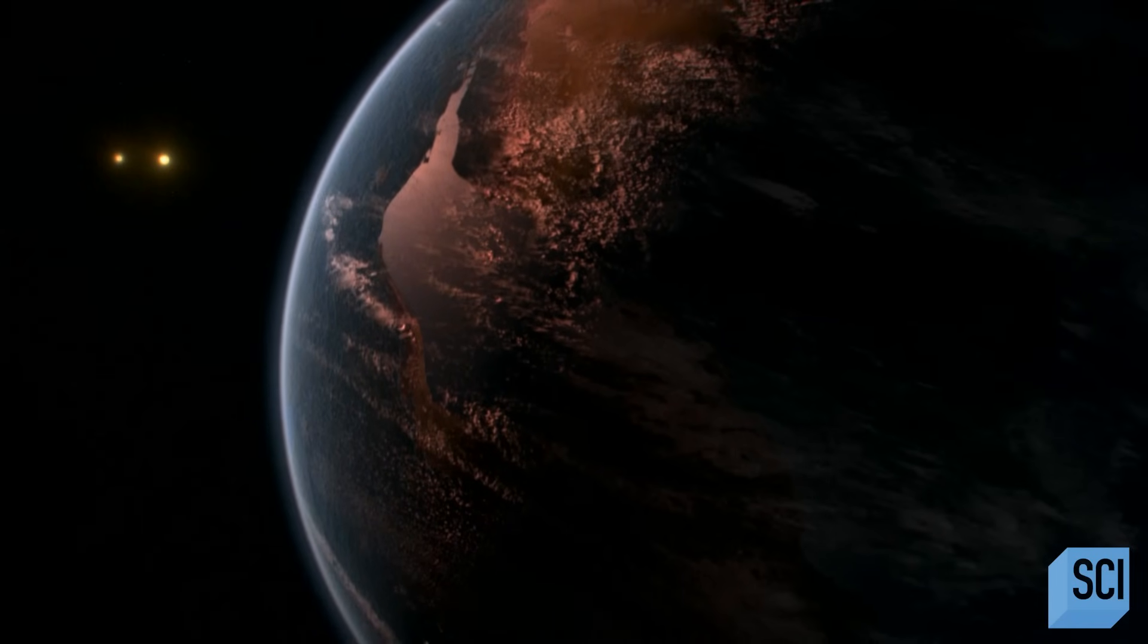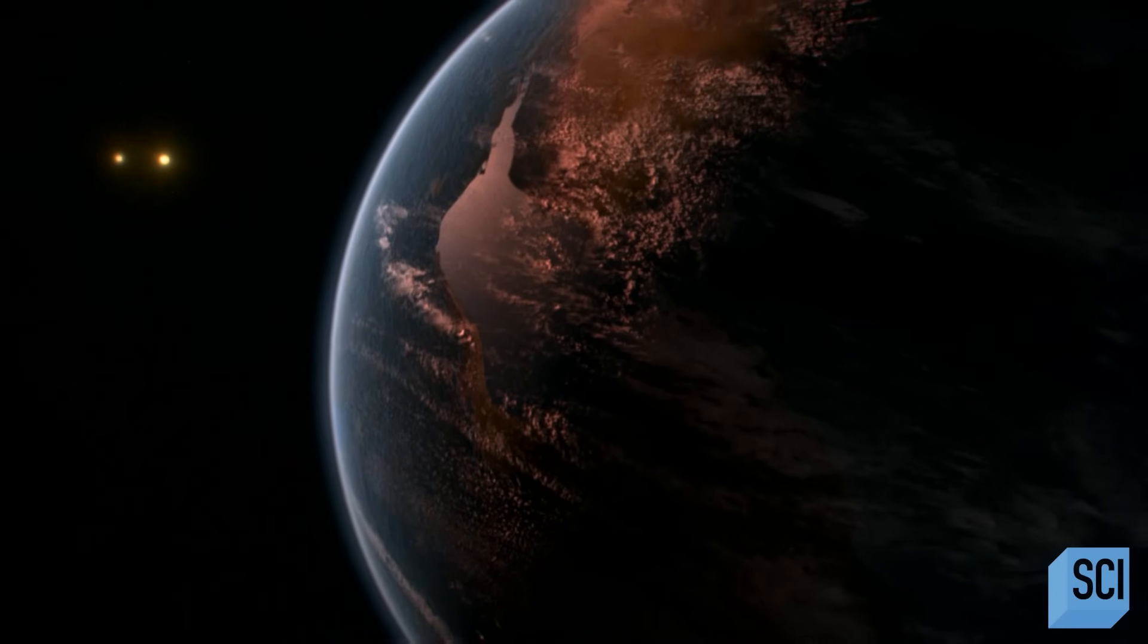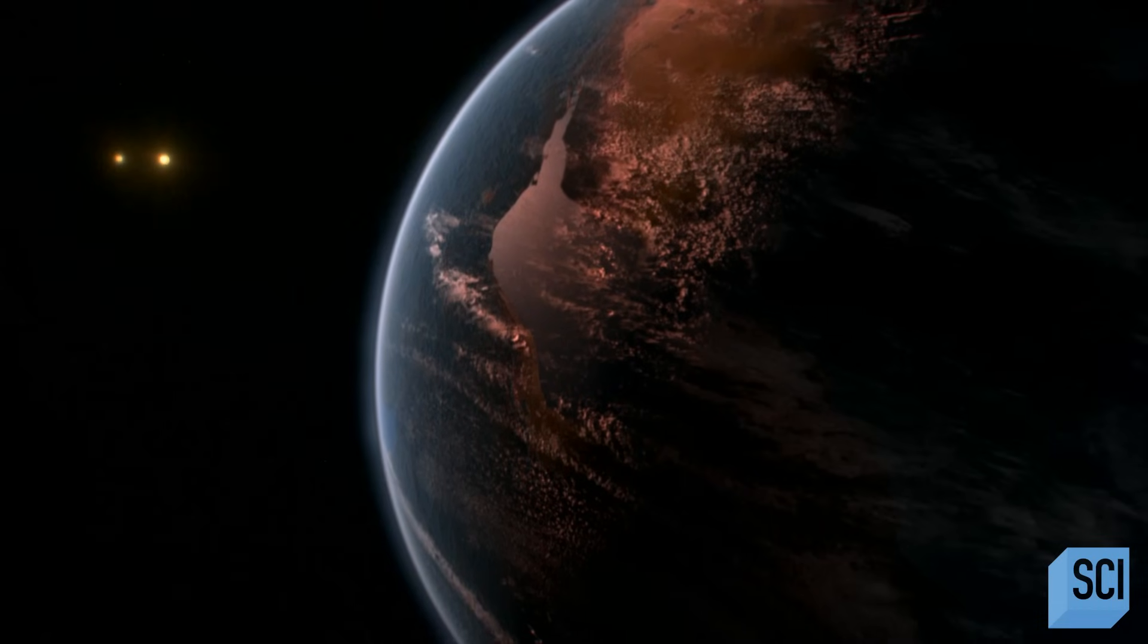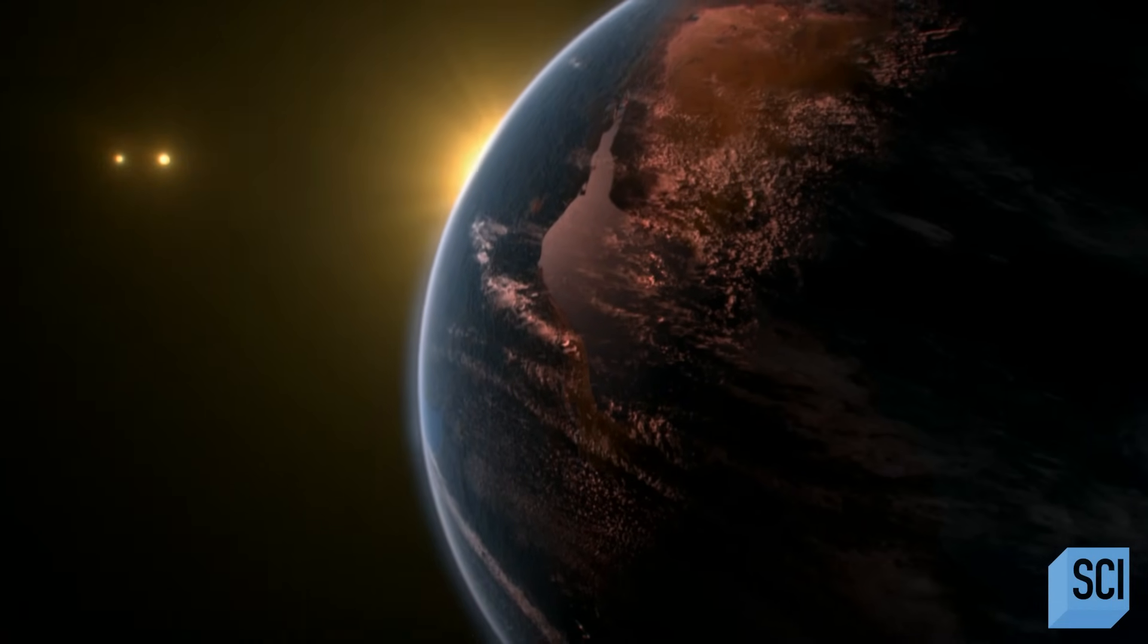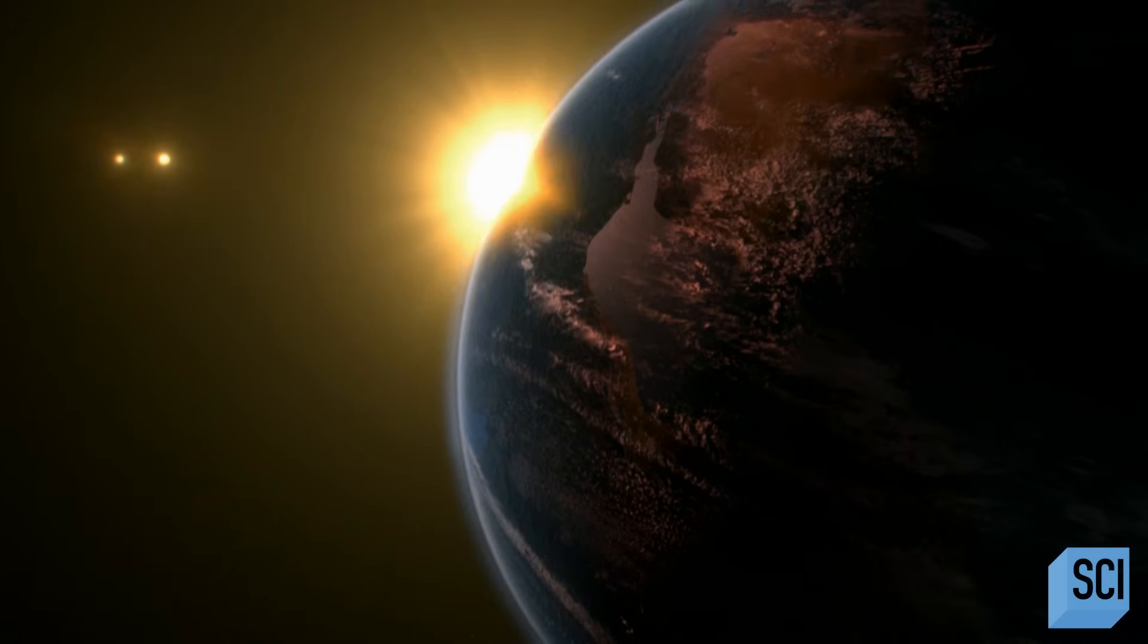21 of the planets scientists found orbit their stars at the right distance to have a climate similar to Earth. It may be oceans teeming with life.